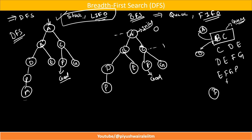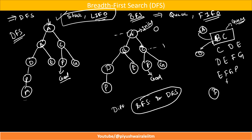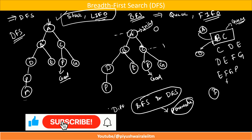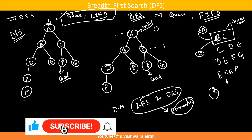So DFS works on a stack and BFS works on a queue. In the next lecture, we are going to discuss the difference between BFS and DFS based on different parameters — time complexity, space complexity, and whether it is complete or incomplete. All these parameters will be discussed in the next lecture, which is very important from an exam point of view. You can expect one question based on this difference between BFS and DFS, so do watch that video.